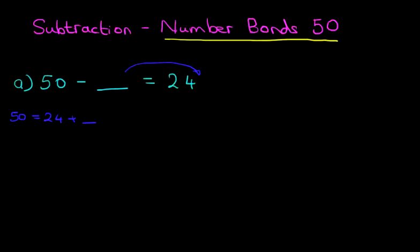If it's minus on the left hand side, if you move it across it becomes a plus, as we see over here. So what number added to 24 will give us 50? And how do we do this?